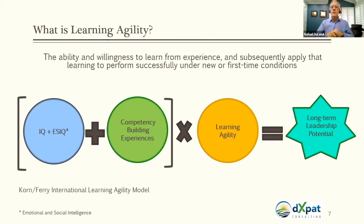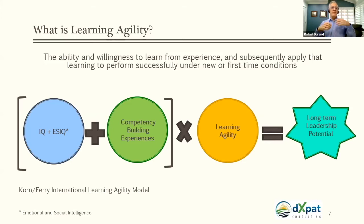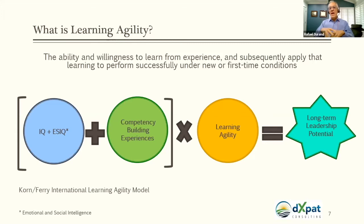A very interesting aspect of the research was that Lombardo and Eichinger asked HR professionals around the world what percentage of the high-performer leader population in their organizations they actually considered high potentials. The average was less than 30%. So those leaders who were valued and who contributed to organizational success — less than 30% of them were considered high potentials by top leadership. That's when the concept of learning agility became very relevant to leadership theory.